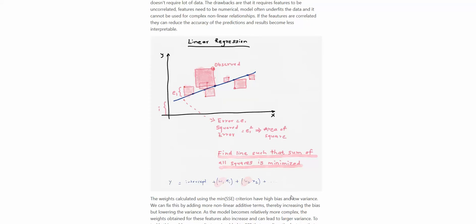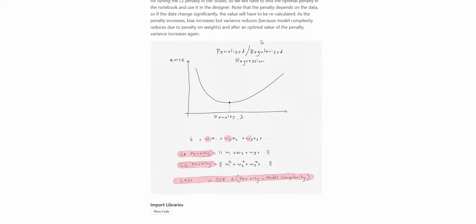Weight inflation happens either because of multicollinearity or high model complexity. High model complexity is not an issue if you're just using linear terms, but when you start adding polynomial versions — x2 squared, x3 squared — even though you're still summing them linearly, you're squaring them to capture non-linearities. As you increase model complexity, these weights start to become very large. The drawback of high model complexity is that models don't generalize very well, so we use a penalized version of linear regression.